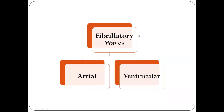Fibrillatory waves are of two types: atrial fibrillatory waves and ventricular fibrillatory waves. If the fibrillatory waves arise from the atrium, it is called an atrial fibrillatory wave. If it arises from the ventricle, then it is called a ventricular fibrillatory wave.